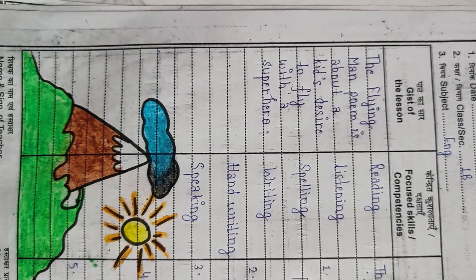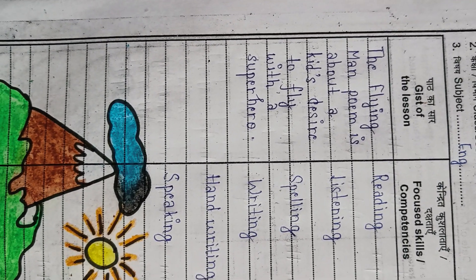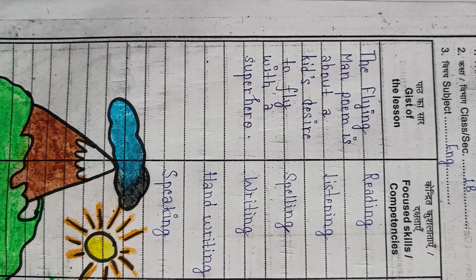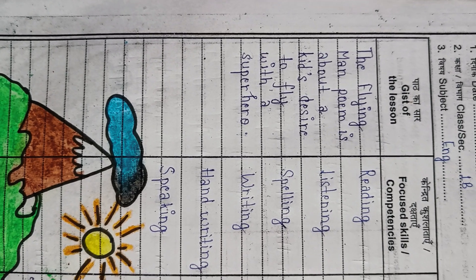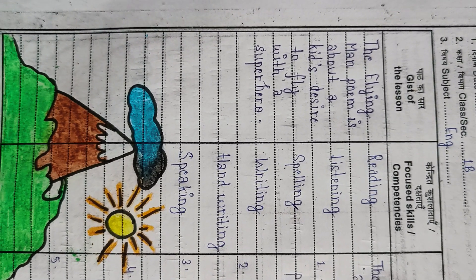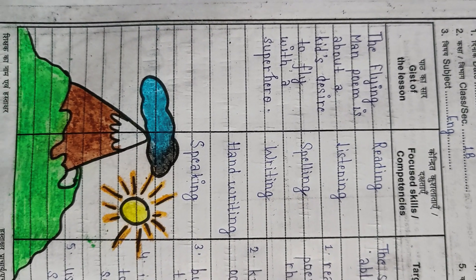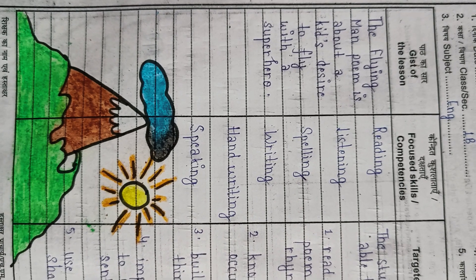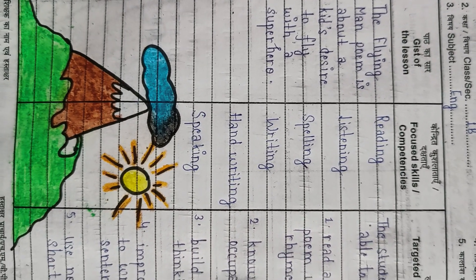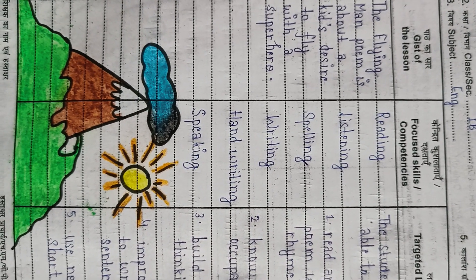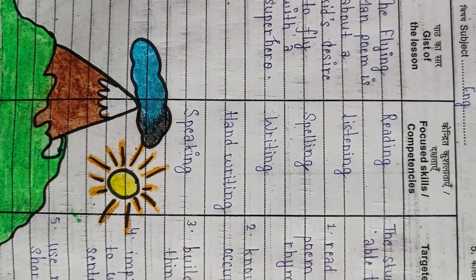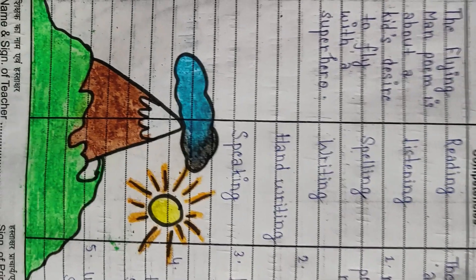The gist of the lesson is that the Flying Man poem is about a kid's desire to fly with a superhero, and the name of the superhero is Flying Man. The focused competencies are reading, listening, spelling, writing, handwriting, and speaking.